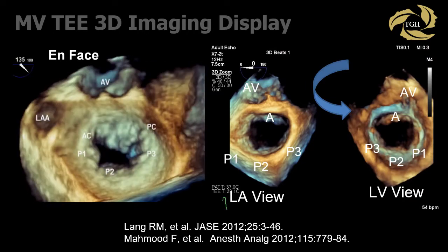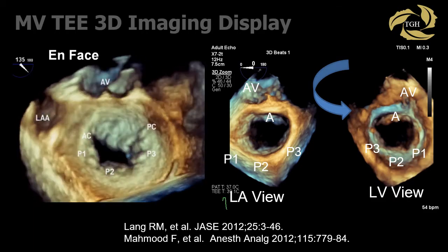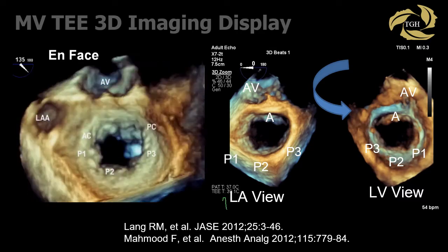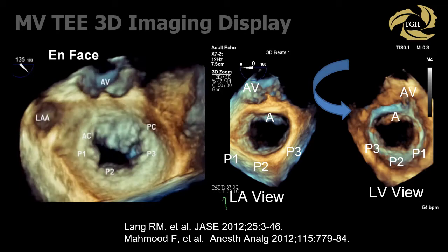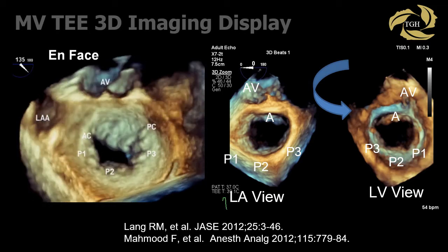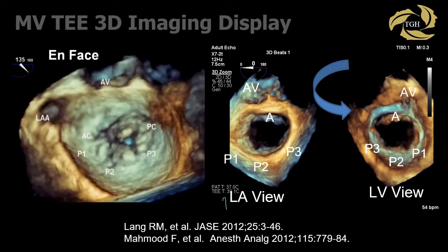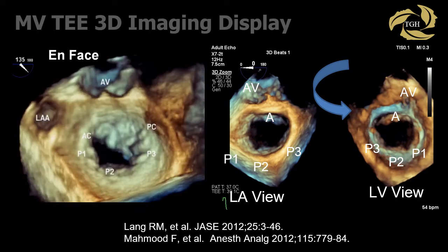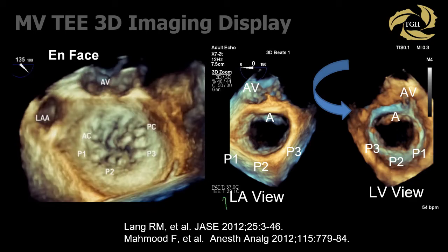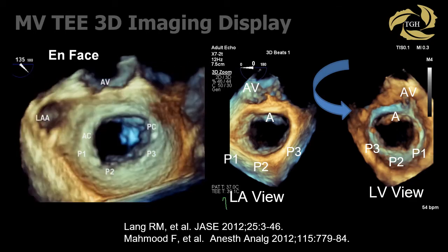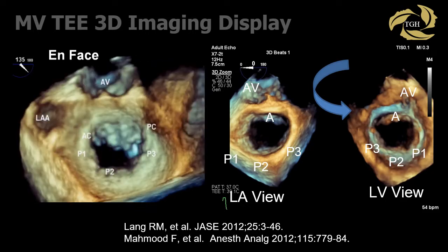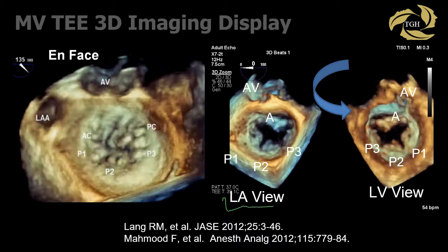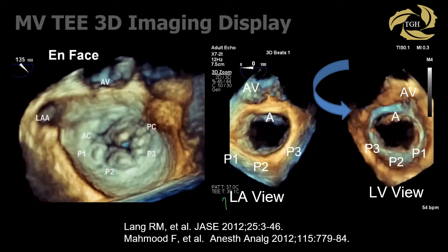Contrary to 2D TEE, 3D TEE shows the entire mitral valve in a single display. By convention, the mitral valve is often shown from the left atrial perspective in the ONFAST view — probably the view that most seduced echocardiographers to 3D echocardiography. The mitral valve can be acquired from any 2D mid-esophageal mitral valve view. It is always helpful to include a surrounding structure such as the aortic valve or left atrial appendage to help orientate the 3D dataset in space. The mitral valve can also be displayed from the left ventricular perspective simultaneously with the ONFAST view, which may be helpful in identifying pathology.